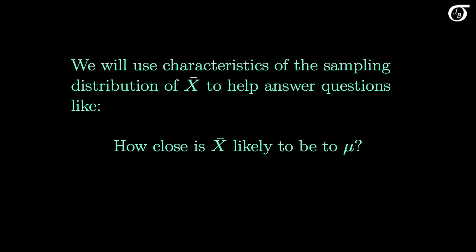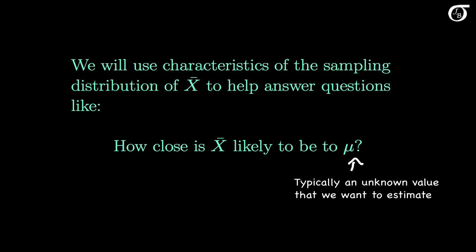Why do we care about the sampling distribution of the sample mean? We will use characteristics of the sampling distribution of X bar to help us answer questions like: how close is X bar likely to be to mu? In practical situations we don't typically know mu — it is an unknown value we're trying to estimate. We use our knowledge of the sampling distribution of X bar to state how close X bar is likely to be to this unknown mu, helping us quantify the uncertainty always present in estimation. The notion of a sampling distribution plays a very important role in statistical inference.